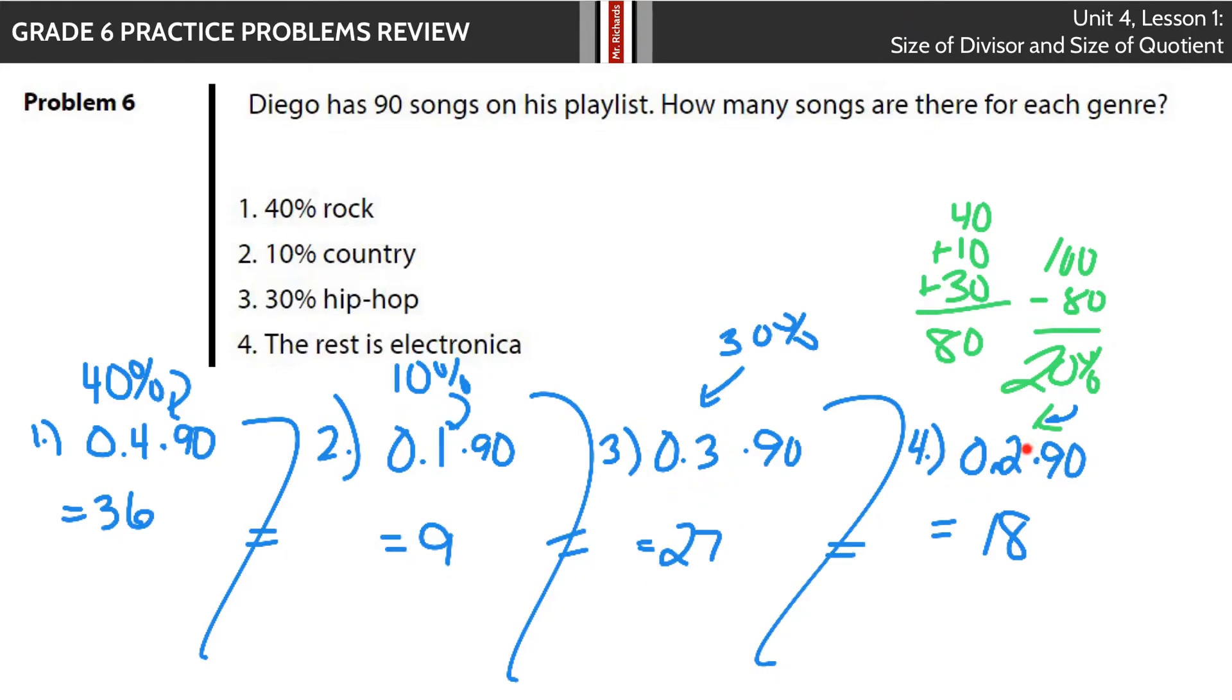And then 0.20 times 90. Where did I get that? Well, the rest is electronica, whatever that is. 40 plus 10 plus 30 gets you 80% used. 100 minus 80, the rest is 20%. So 0.2 times 90 is 18.